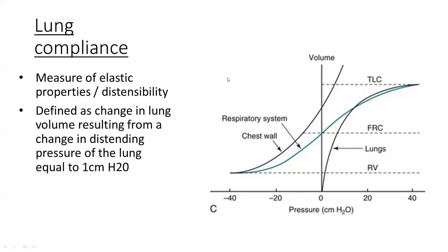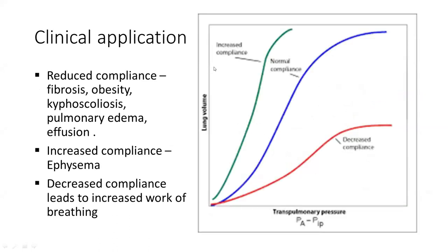The clinical application of static compliance: on a normal curve, the slope tells us the degree of compliance. Compliance — the elasticity of the lungs — is reduced when there is fibrosis, obesity, kyphoscoliosis, pulmonary edema, or effusion; the slope decreases and a greater transpulmonary pressure is required to increase lung volume with each breath. Conversely, in emphysema, compliance increases beyond normal, so even a small change in pressure causes a large increase in lung volume. Decreased compliance leads to increased work of breathing.